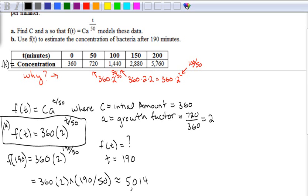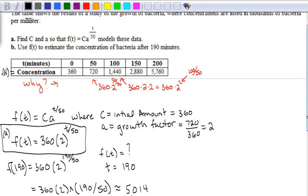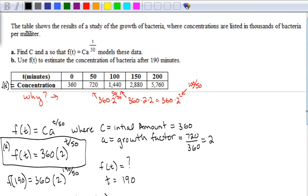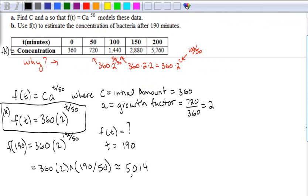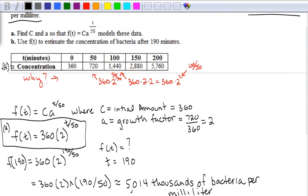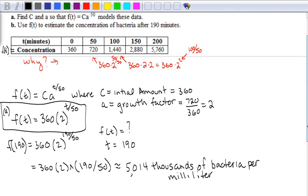And by the way, that is in between the 150 and the 200, so it does make sense. And the units, they do tell us what the units are. Thousands of bacteria per milliliter. So that would be in thousands of bacteria per milliliter. And that would be the answer to part B.